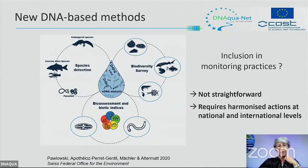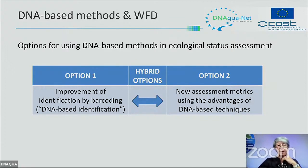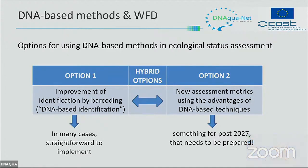Including DNA methods in monitoring practices is not straightforward — it requires harmonized actions at national and international levels. There are two different options for using DNA-based methods in ecological status assessment. Option one is to improve identification using barcoding — a different way of identifying organisms. Option two is to use fully new metrics taking full advantage of DNA-based techniques. Between both options there are hybrid options. For option one, implementation should be quite straightforward especially for some BQEs like diatoms, but option two would not be before 2027 and needs very thorough preparation.